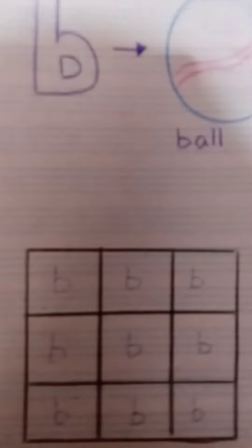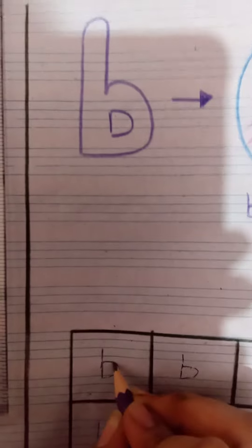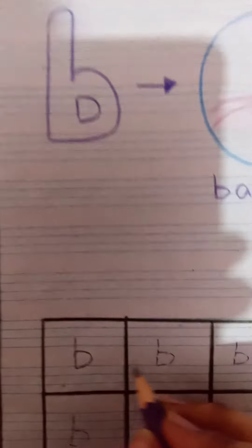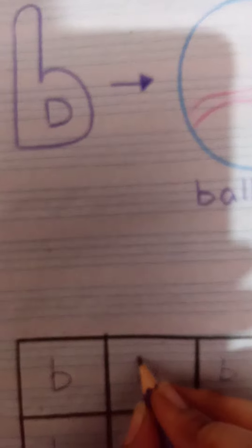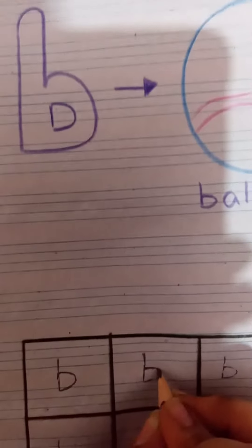Okay, now trace with the help of pencil. One, two. What is this? This is letter B and the sound of this letter is B.